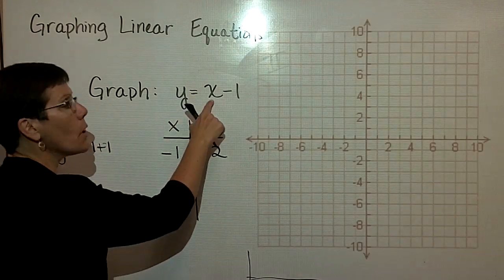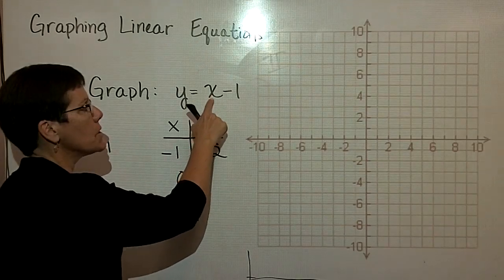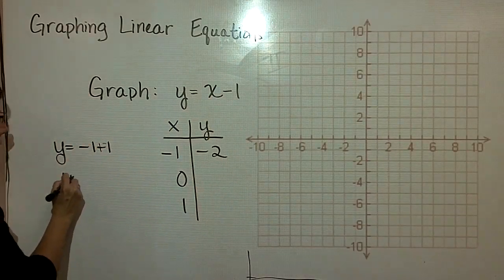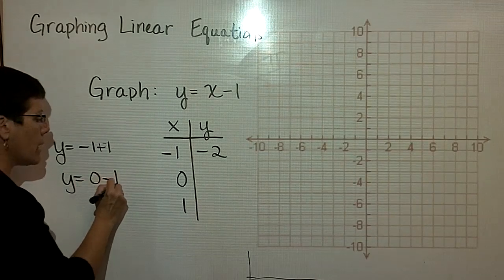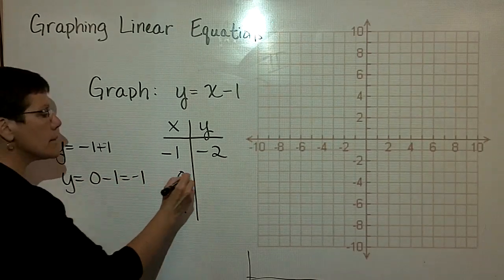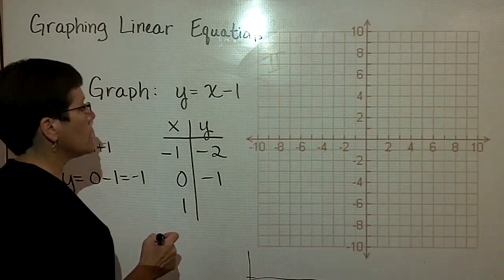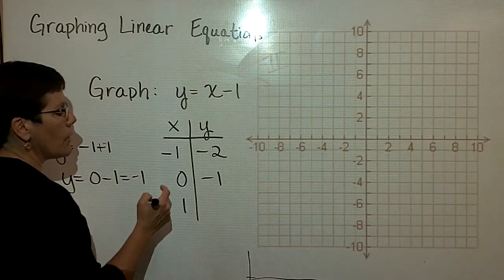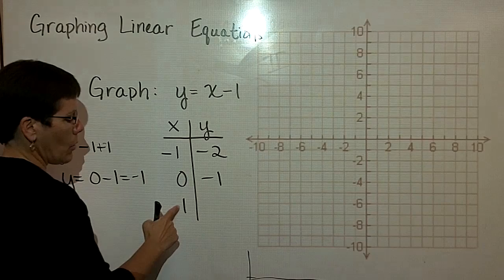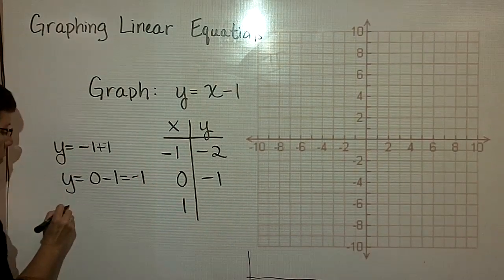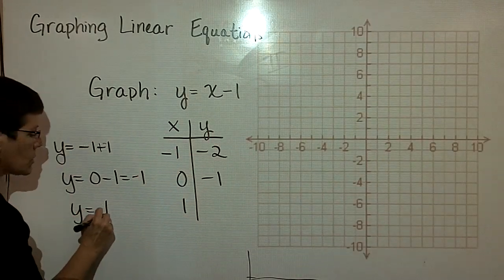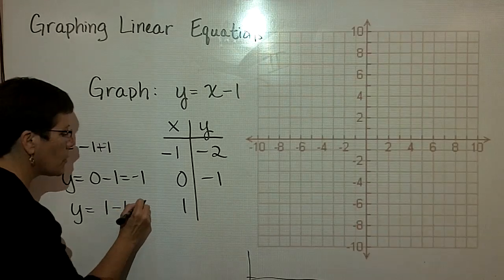I found out what my y value would be when I put a negative 1 in there for x. When I put a 0 in here for x, I have 0 minus 1. y is equal to 0 minus 1, and that is a negative 1. Now, finally, I'll put a 1 in here for x. So y equals whatever 1 minus 1 is, well, that is 0.